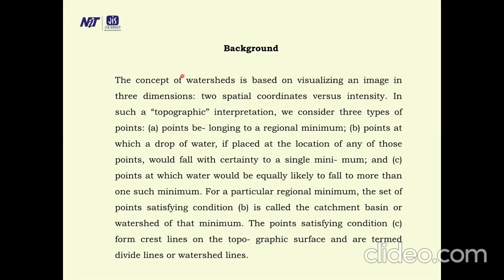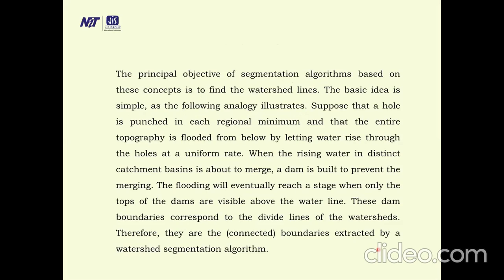The concept of watershed is based on visualizing an image in three-dimensional topographic terms. A point at a regional minimum is where a drop of water placed at that location would fall with certainty to a single minimum. A saddle point is where water would be equally likely to fall to more than one such minimum. For a particular regional minimum, the set of points satisfying the first condition is called a catchment basin or watershed of that minimum. Points satisfying the saddle condition form crest lines termed divide lines or watershed lines. The principal objective of the segmentation algorithm is to find these watershed lines.